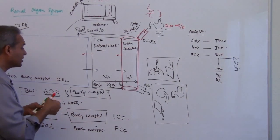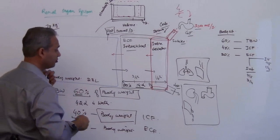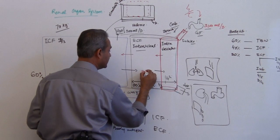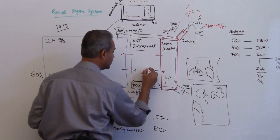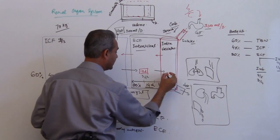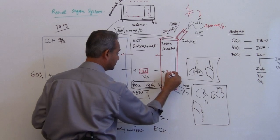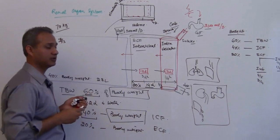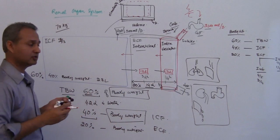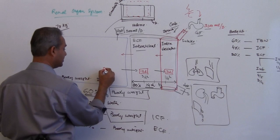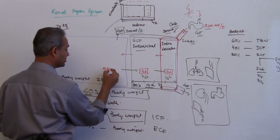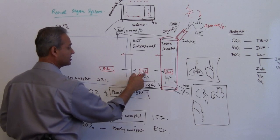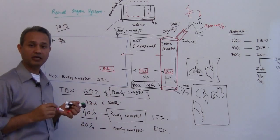To summarize the key figures: 60% of body weight is total body water, 40% is intracellular fluid, and 20% is extracellular fluid. That extracellular fluid is divided into interstitial (about four-fifths or three-fourths) and intravascular (about one-fifth or one-fourth). For a 70 kg person, this means approximately 11 liters interstitial and 3 liters intravascular.